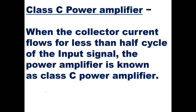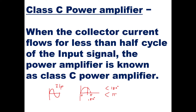Less than half cycle means: if this is the input signal, half cycle goes from zero to pi, that is 180 degrees. The collector current should flow for less than 180 degrees — less than half cycle. If the collector current flows for less than 180 degrees, that power amplifier is known as a Class C power amplifier.